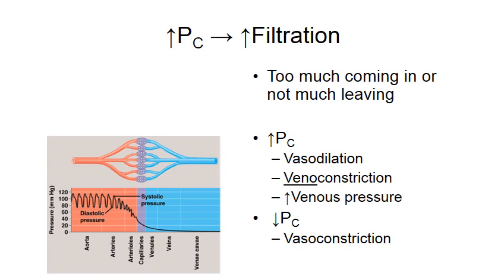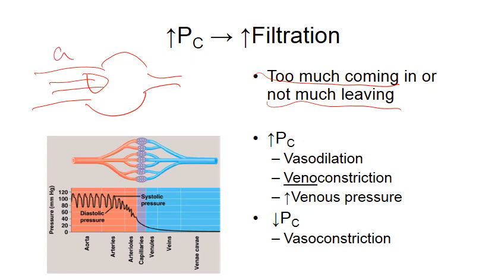When the capillary pressure increases, there's increased filtration. And that happens when too much is coming in or not much is leaving, right? So we talked about vasodilation bringing in a lot of fluid into the capillaries, which causes capillary filtration, or venoconstriction. I don't mean to say these things are happening at the same time. One or the other would cause the capillary pressure to increase. Or alternatively, there could be backing up on the venous side, which increases the venous pressure as well as the capillary filtration.